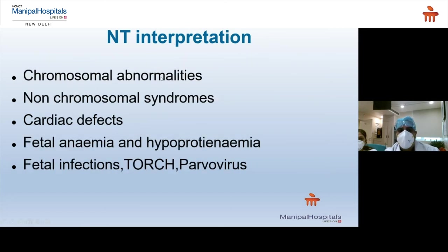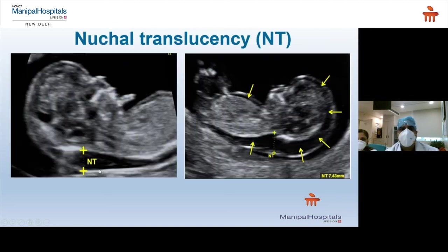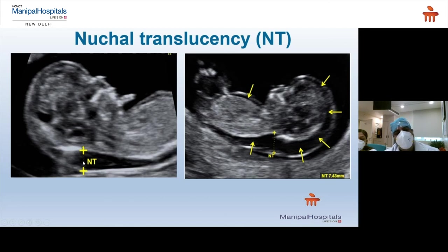Increased NT is associated with chromosomal abnormalities, non-chromosomal syndromes, cardiac defects, fetal anemia and hypoproteinemia, and fetal infections such as CMV and parvovirus. In examples shown, NT is visibly increased and abnormal. NT is basically a fluid overload, so correct fetal positioning is essential. In one fetus there is skin edema throughout and NT reaching 7.4 mm — both fetuses shown are therefore abnormal and aneuploid.